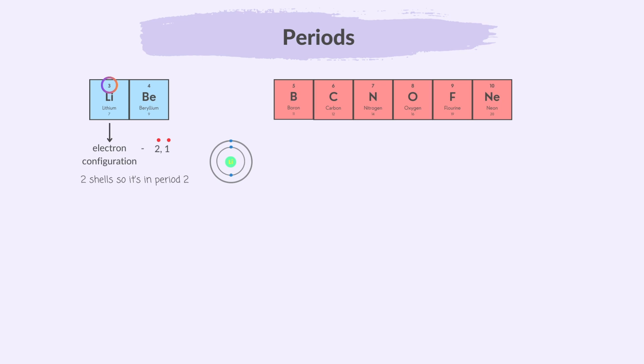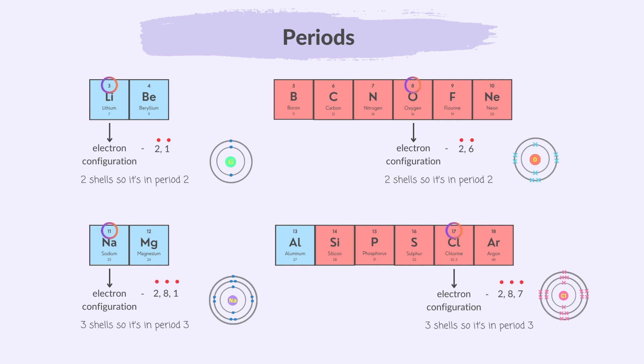So, in the elements of period 2, like lithium and oxygen, the atoms have 2 electron shells. In period 3, like sodium and chlorine, they have 3, and so on.